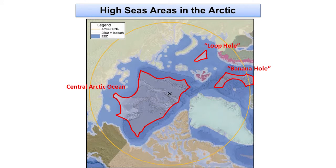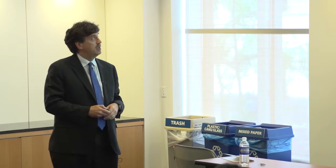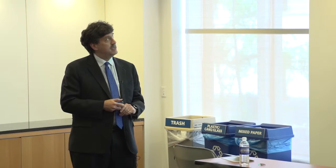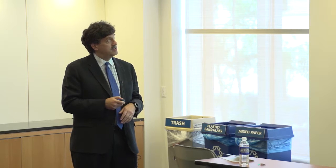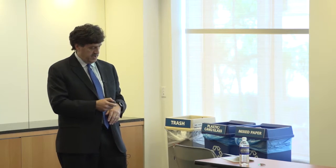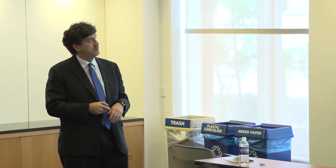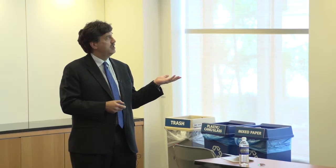Here you have those same three high seas pockets in the middle of the Arctic, and there's simply no fishing at all going on here. It has been ice-covered year-round for all of human history — until now. If you know anything about the Arctic, you'll know it's melting. This is a graph showing the extent of minimum sea ice, typically measured in September. Here's a depiction of what the sea ice extent looked like in September 1984 compared to 2012 — really quite amazing.